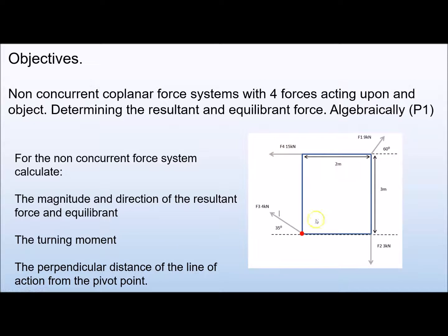We're going to take all these forces and turn them into a resultant force acting upon our point. From there we determine its magnitude — how big that force will be — and its direction, which direction it will be travelling. To keep the system in a state of static equilibrium, we need to calculate the equilibriant, which would be 180 degrees apart from the resultant.